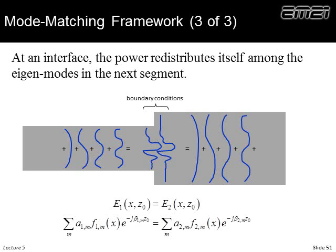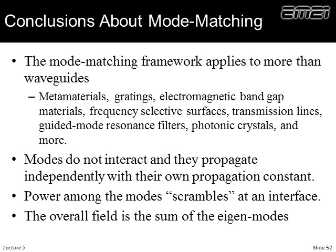To summarize mode matching: the modes in uniform segments travel independently with fixed amplitudes, only going in and out of phase. All the interesting physics — the scrambling of power among modes — happens at the interfaces between sections, where the field must look the same on both sides but the eigenmodes differ. This framework applies not just to waveguides, but to photonic crystals, waves in air, gratings, and more.